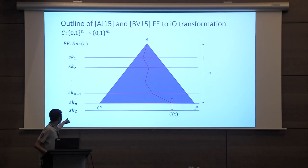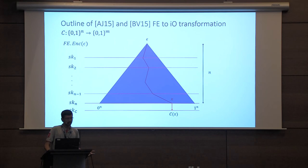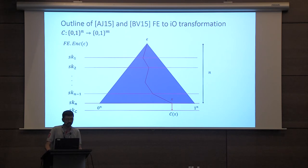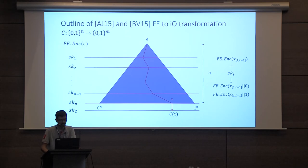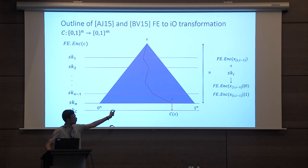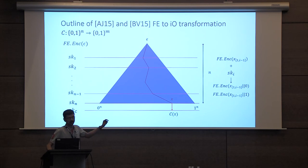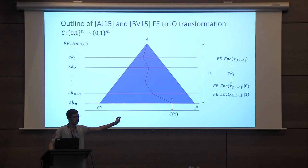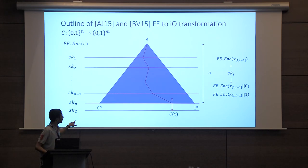The obfuscation of the circuit consists of functional secret keys SK1 through SKN, a final functional secret key SKC, and an initial ciphertext encrypting the root epsilon. The final functional secret key SKC implements the circuit we want to obfuscate. The intermediate functional secret keys — one per level of the binary tree — implement the bit extension functionality. Given an encryption of an (i−1)-bit string x1 to x_{i−1} and decrypting using secret key SKi, you get two ciphertexts: one containing the extension of the input by bit 0, and the other by bit 1.